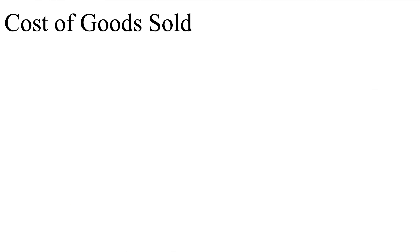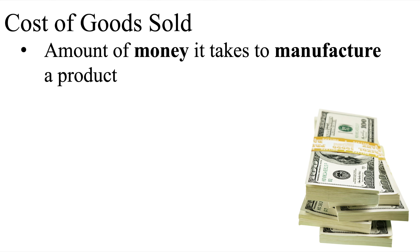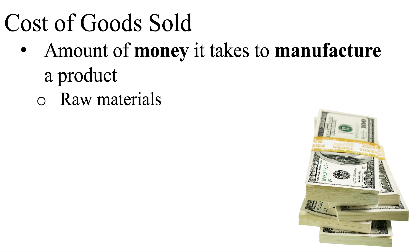Cost of goods sold is the amount of money it takes to create a product that you will then sell. In other words, cost of goods sold is how much money it costs to manufacture a product that you will end up selling. Some of this money will be spent on raw materials, usually at the wholesale price, meaning you'll buy these materials in bulk at a lower price and then increase the final selling price when you charge the customer.